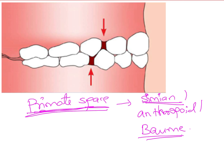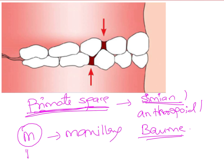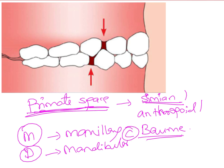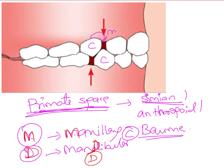These spaces are characteristically seen mesial to the maxillary canines and distal to the mandibular canines. One way to remember this: M stands for mesial and M is in maxillary; D stands for distal and D is in mandibular. So M for maxillary — mesial; D for mandibular — distal. This is the primary canine, so mesial in maxillary and distal in mandibular.